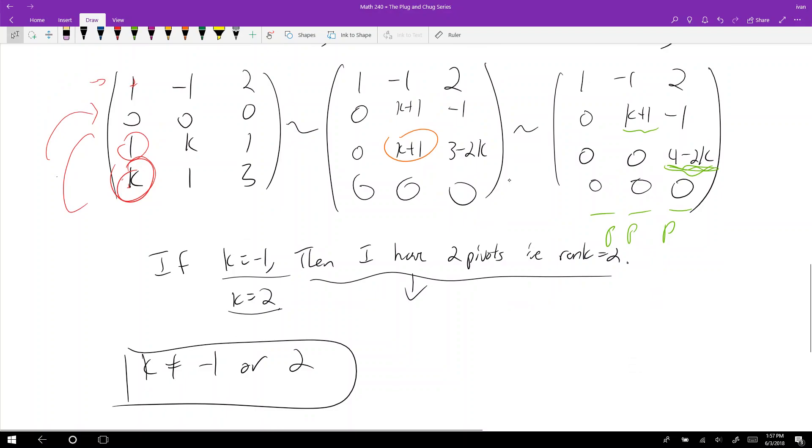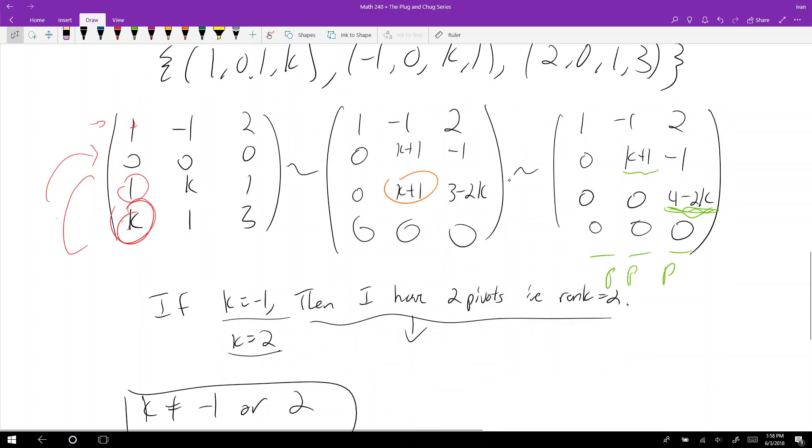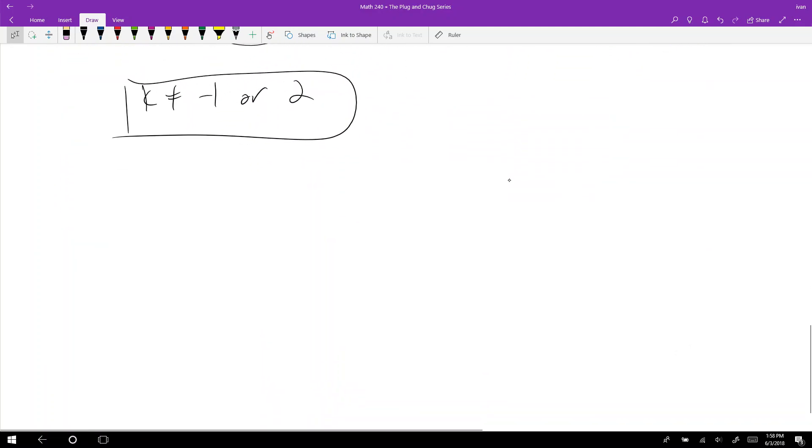And if K is anything but those two numbers, then these three vectors are linearly independent. All right, so remember, when you're reducing, independence means that the rank of the matrix that you're reducing needs to equal the number of vectors you're given. All right, or this is the number of columns in the matrix.